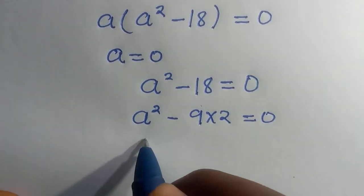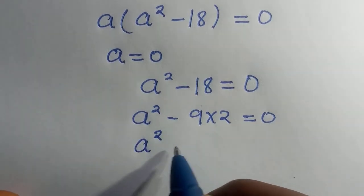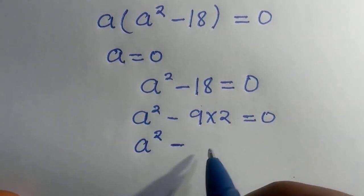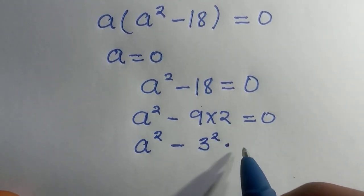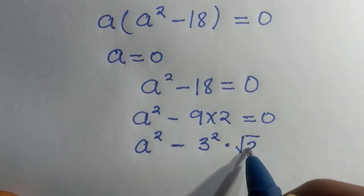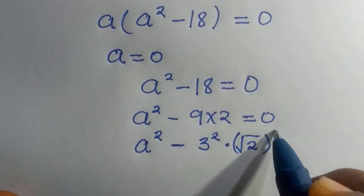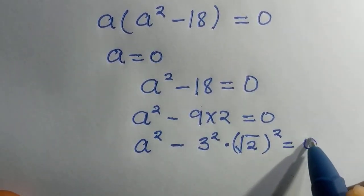Then if we have this as a squared minus, we know 3 squared is given as 9, then multiply by, if I have this as square root of 2, all raised to the power of 2, it's given as 2 as well.